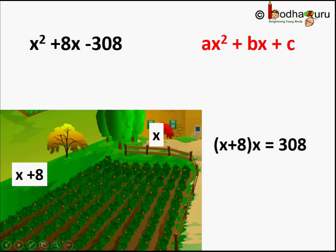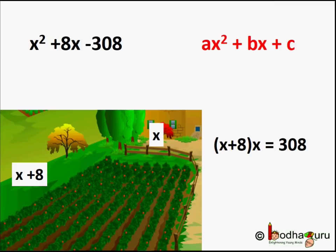Let us take the example that we solved in the earlier video using factorization method. Say the length of the field is 8 meters more than its width and area is 308 square meters. So the equation we formed was x² + 8x - 308 = 0.